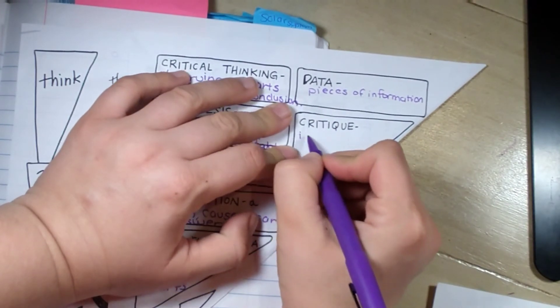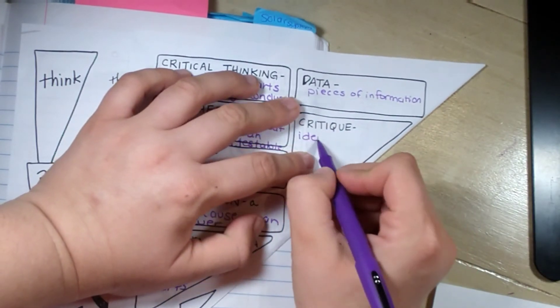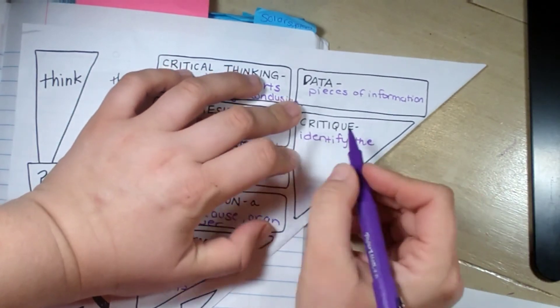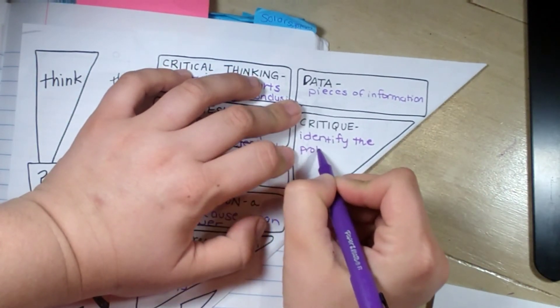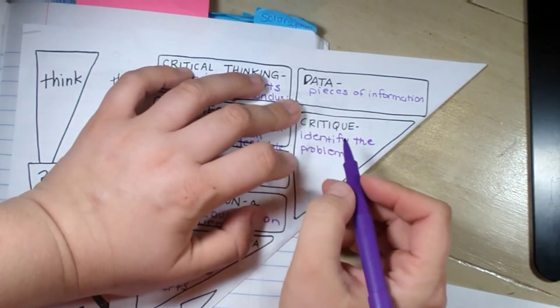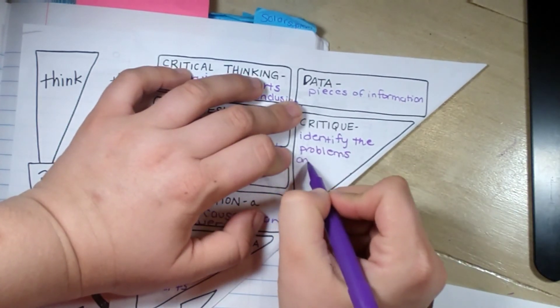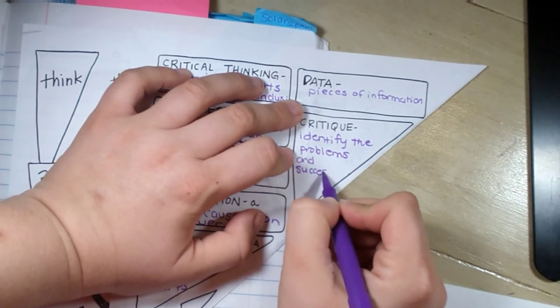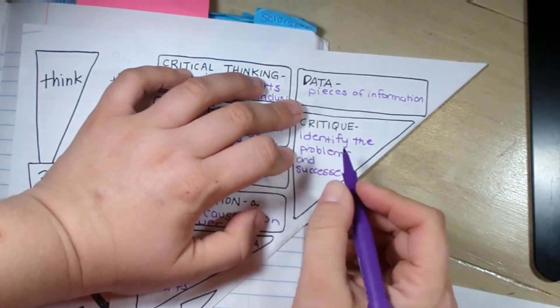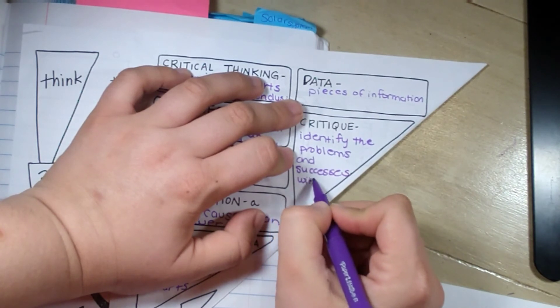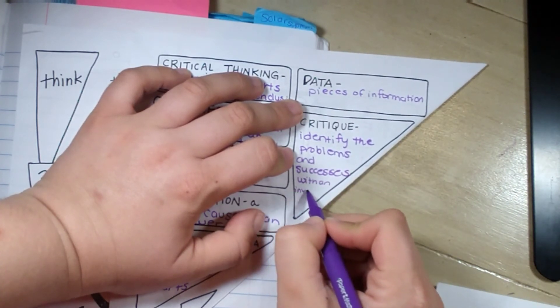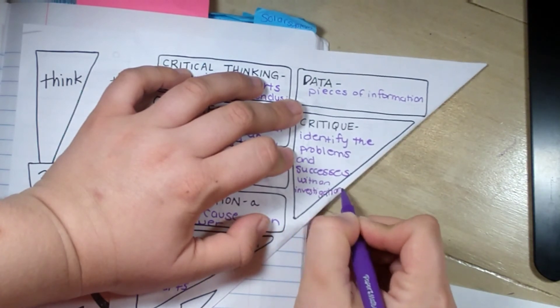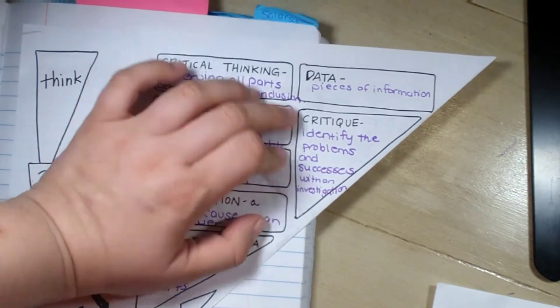A critique is to identify the problems and successes. Did something go wrong that didn't allow you to come up with data? Did something go right and you want to try it again to see if you get the same answers? That is what a critique is. What would you do differently? What went really well? That is a critique.